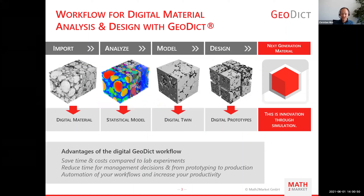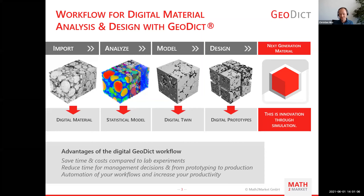Typical applications for GeoDict are digital material analysis and the design of new material prototypes. For both, you start out with a scan of your material and characterize it by calculating important properties such as conductivity and permeability. Based on computed material properties, the GeoDict workflow for digital material design — for example, for batteries — may be performed.